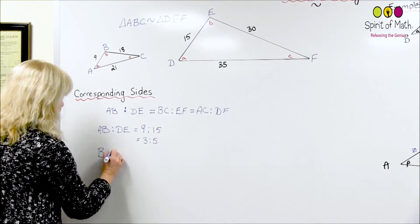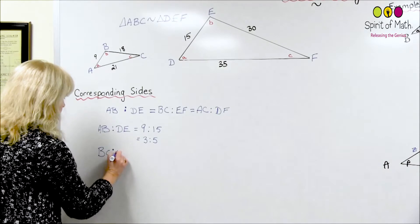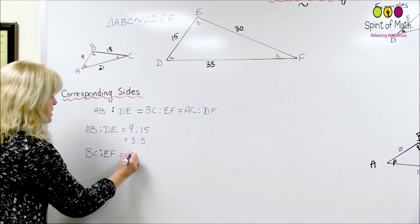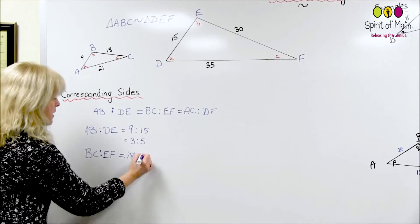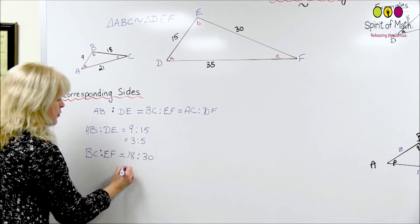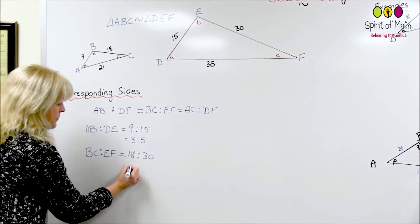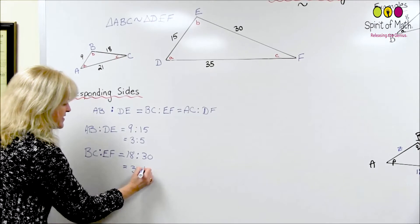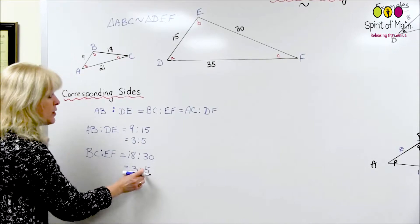Let's look at the next ratio. BC to EF. BC is 18, EF is 30. They're both divisible by 6. 18 divided by 6 is 3, 30 divided by 6 is 5. Same ratio, which is what it should be if these are similar triangles.